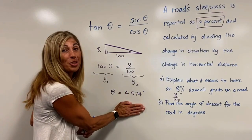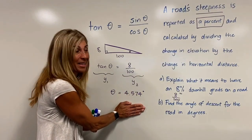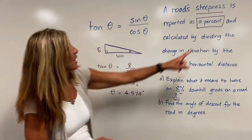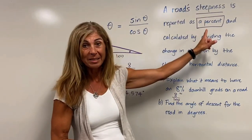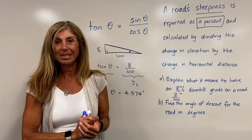Note, this is in degrees, not a percent. This is a common issue. Even though our steepness is measured and reported as a percent, this is the angle of descent.